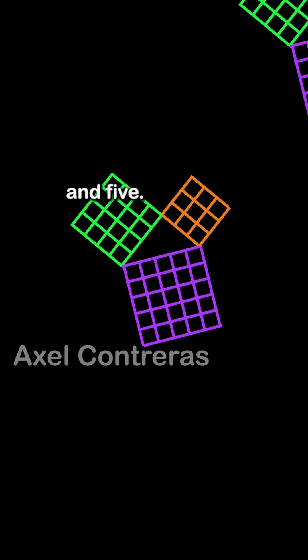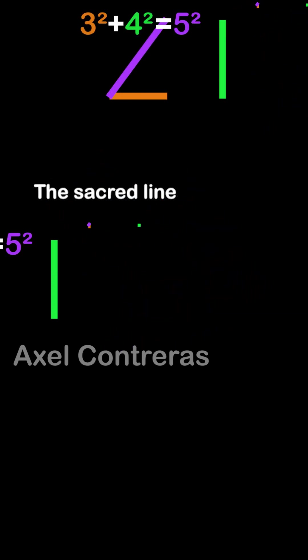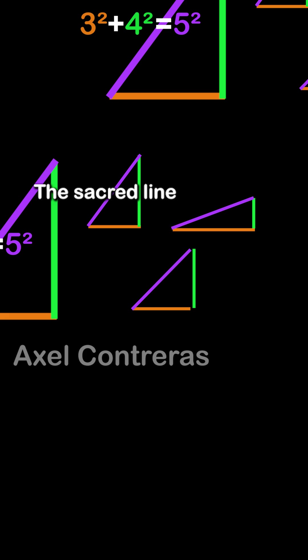Three, four, and five, the sacred line of Pythagorean triple divine.